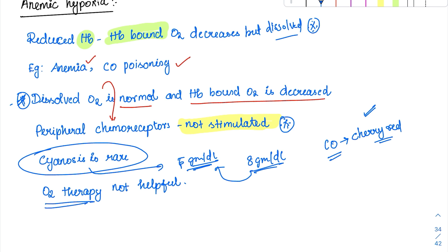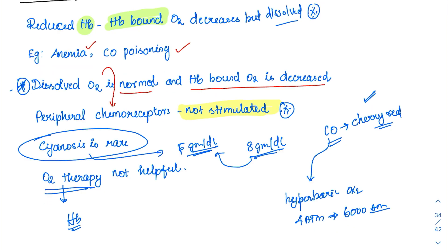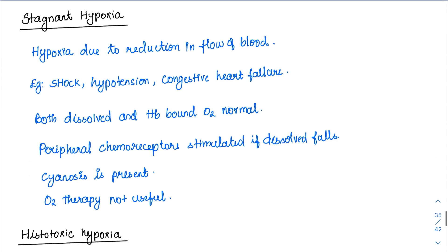Regarding oxygen therapy in anemic hypoxia: it is not very helpful because hemoglobin itself is reduced, so there is not much capacity to increase hemoglobin-bound oxygen. However, in carbon monoxide poisoning, hyperbaric oxygen can be used — oxygen given at high increased pressure (for example, 4 atmospheres) increases the level of dissolved oxygen, which can save vital tissues from hypoxia. But straightforward pure oxygen therapy is not particularly helpful in anemia.